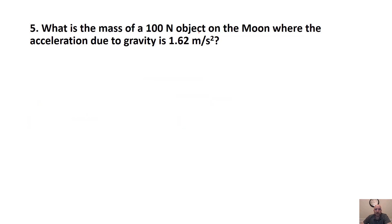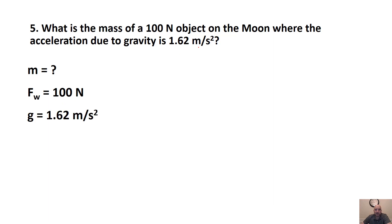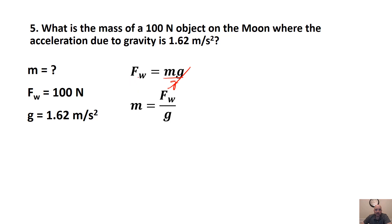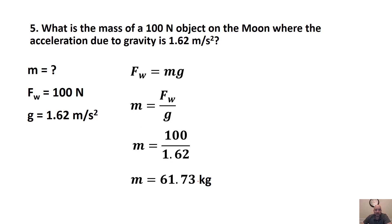What is the mass of a 100-newton object on the moon where the acceleration due to gravity is 1.62 meters per second squared? Careful — they are giving you a weight, not a mass. We're trying to find mass from a weight of 100 newtons and g of 1.62 m/s². Rearranging the equation: m equals Fw over g. Plugging in values, we get 61.73 kilograms.